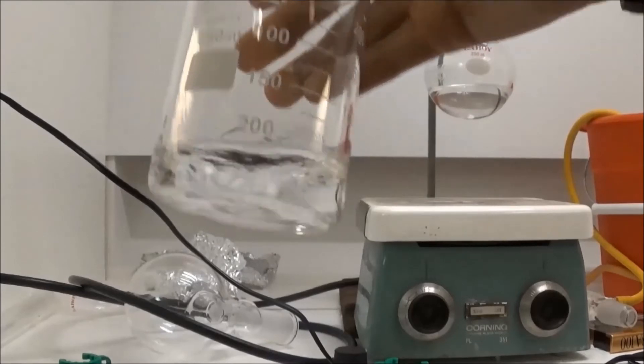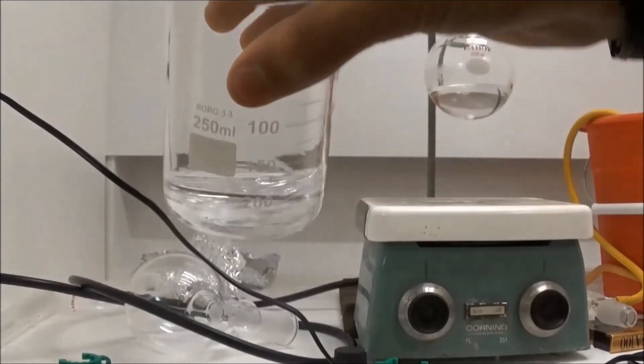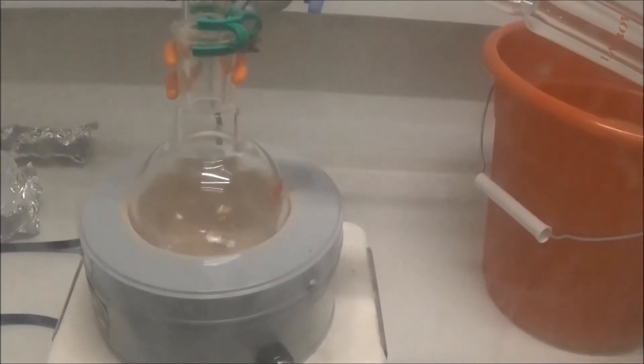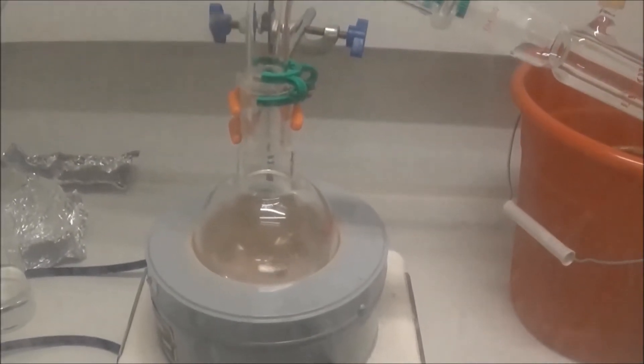Some acetone was recovered, in addition to 40 milliliters left in the Soxhlet. Heating to 60 Celsius under vacuum removed most of the remaining acetone.